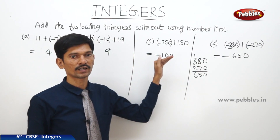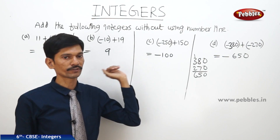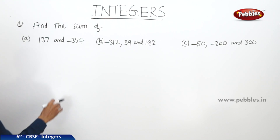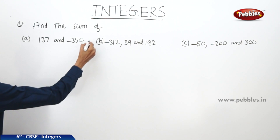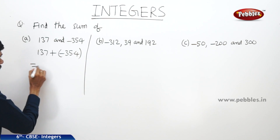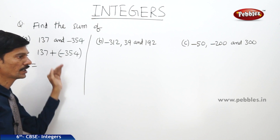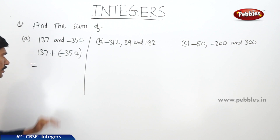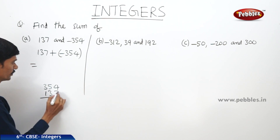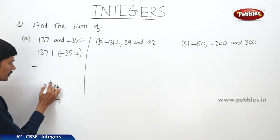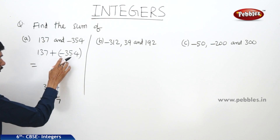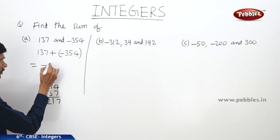In this way we can add two positive integers, two negative integers, or a positive and a negative integer. Now find the sum of 137 and (-354). Since a positive and a negative integer are added, we subtract the smaller from the bigger: 354 minus 137 equals 217. The bigger number 354 has a minus sign, so the answer is minus 217.